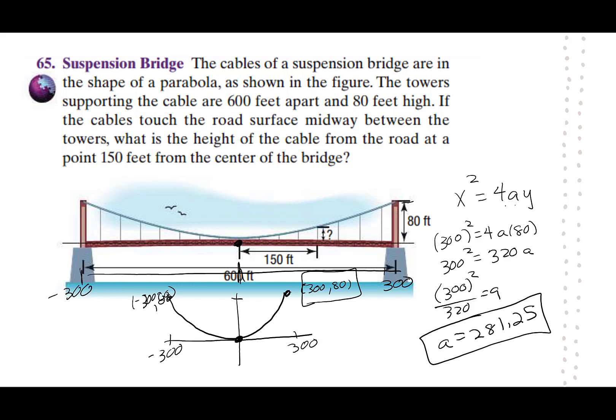Now we have a number to put in for our a. So let's write that. I have x squared equals 4 times 281.25 times y. So let's do that times 4. I have x squared equals 1125y.